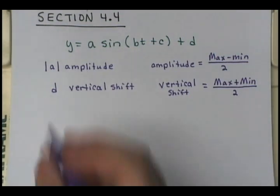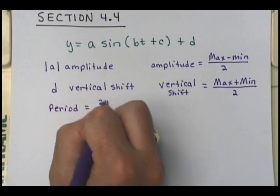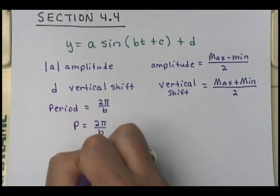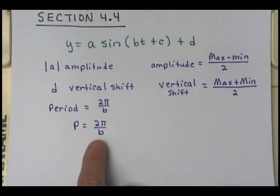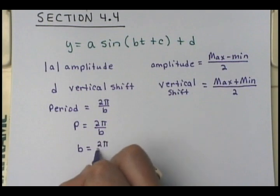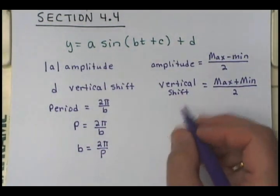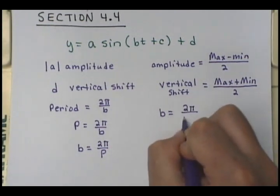We also know that the period is equal to 2π over b. Let p equal 2π over b. If they gave you the period but you didn't know b, you can solve for b: b would be 2π divided by your period.